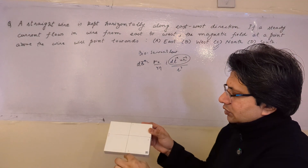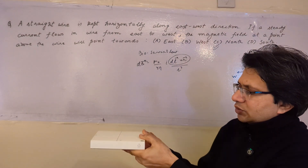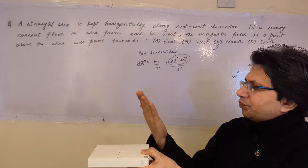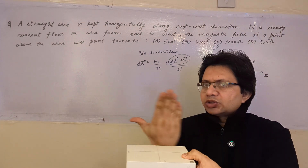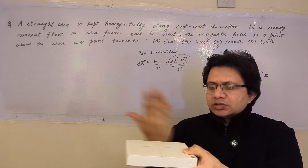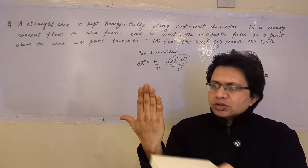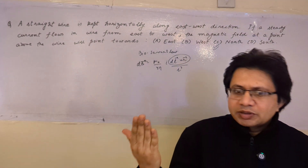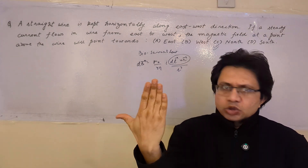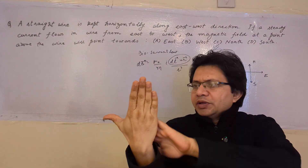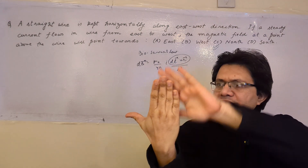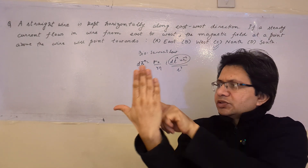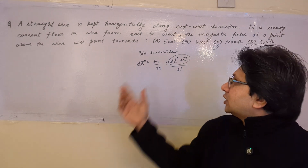This is east, this is west, this is north, and this is south. Placing the thumb direction from east to west, and the fingers pointing upward to the point above the wire — you can see the palm faces perpendicular to the north direction. So this is the north direction, and the answer is north.